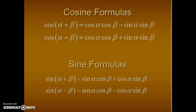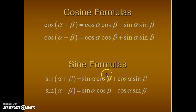For the sine formulas: the sine of alpha plus beta equals the sine of alpha times the cosine of beta plus the cosine of alpha times the sine of beta. The sine difference formula: the sine of alpha minus beta equals the sine of alpha times the cosine of beta minus the cosine of alpha times the sine of beta. Notice that where cosine uses cosine-cosine and sine-sine, the sine formulas use sine-cosine and cosine-sine with alpha and beta respectively.